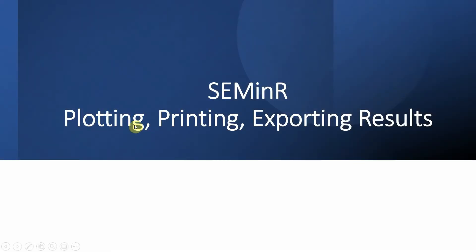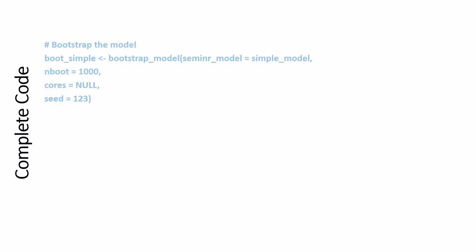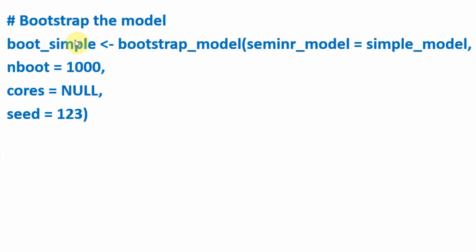In this session we are going to look into how to plot, print, and export results in R. Before that, we will quickly review what we did in the last session — bootstrapping the model. The first thing we did was call the bootstrap_model function and specify our model. In this case, our model was the estimated simple model, using the estimate_pls function.